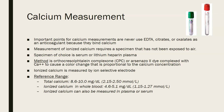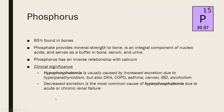The reference range for total calcium is 8.6–10.0 mg/dL or 2.15–2.50 mmol/L. For ionized calcium in whole blood, it is 4.2–5.1 mg/dL or 1.15–1.27 mmol/L. Ionized calcium can also be measured in plasma or serum with slightly different ranges. Note that ionized calcium values are approximately half of total calcium values, as expected.